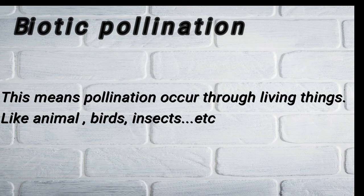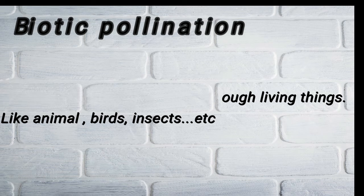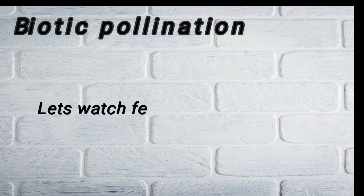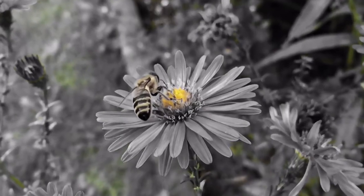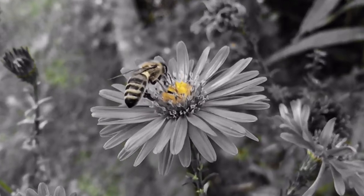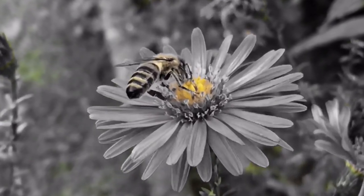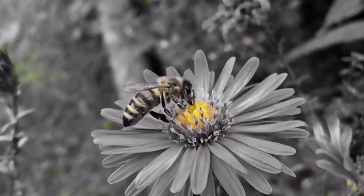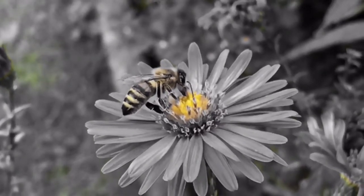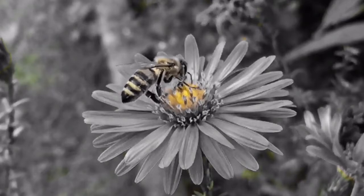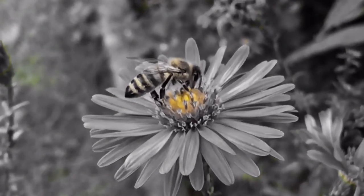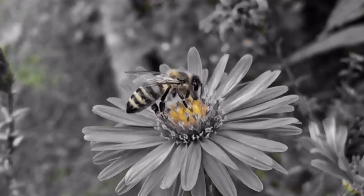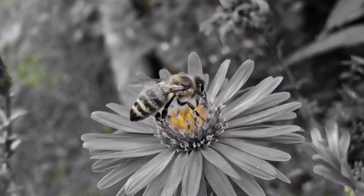The other part is biotic pollination. This means pollination occurs through living things like animals, birds, insects, etc. Let's see a little clip to see the pollination occurring. Here the bee is found on the flower where it's trying to get its nectar.